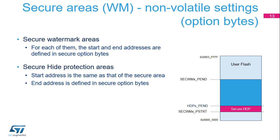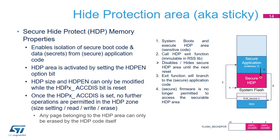Each mode supports a secure hide protection area starting at the same start page offset and ending at a programmable end page offset. The contents of the secure hide protection area is marked as non-accessible after the corresponding HDPA access disabled bit is set to 1. The secure HDPE area is part of the flash watermark-based secure area. It enables isolation of the secure boot code and data secrets such as authentication and cryptographic keys from the secure application code. The HDPE area is activated by programming the end page offset and setting the HDPE enabled bit. Access to the hide protection area can be denied by setting the HDPE access disabled bit in the FLASH_SEC_HDPCR register.